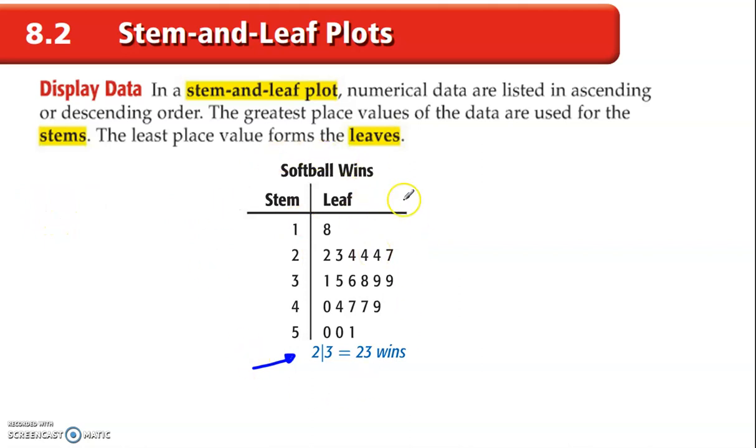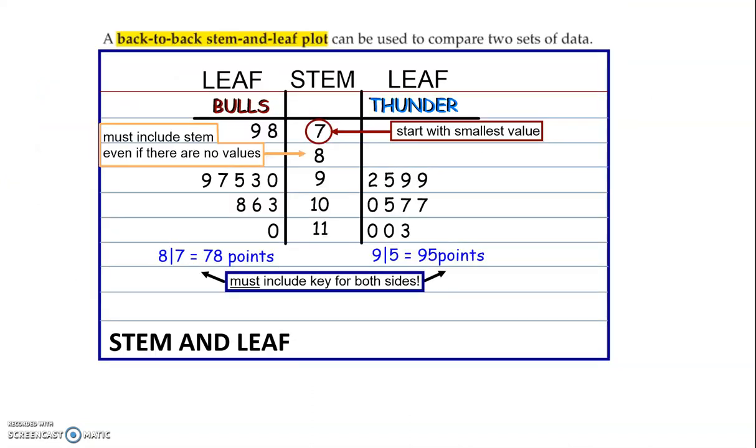Okay, now this is something you probably haven't seen before, the back-to-back stem and leaf plot. Okay, this is an example here of a back-to-back stem and leaf plot. For back-to-back stem and leaf plot, you can compare two sets of data. For example, different weather patterns in different places. Okay, or here we have an example of scores for two different teams.